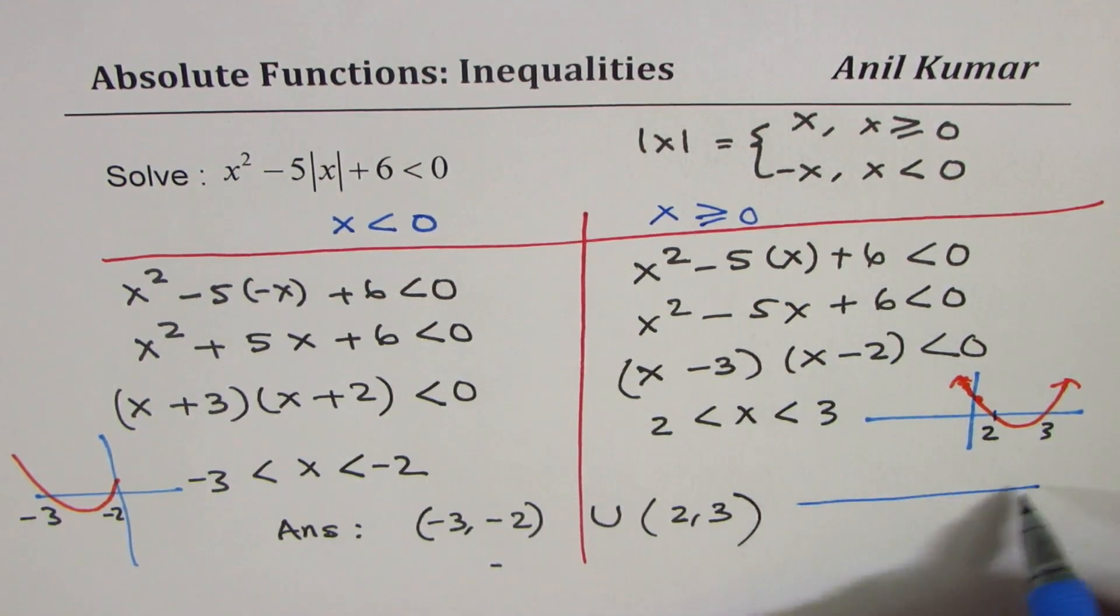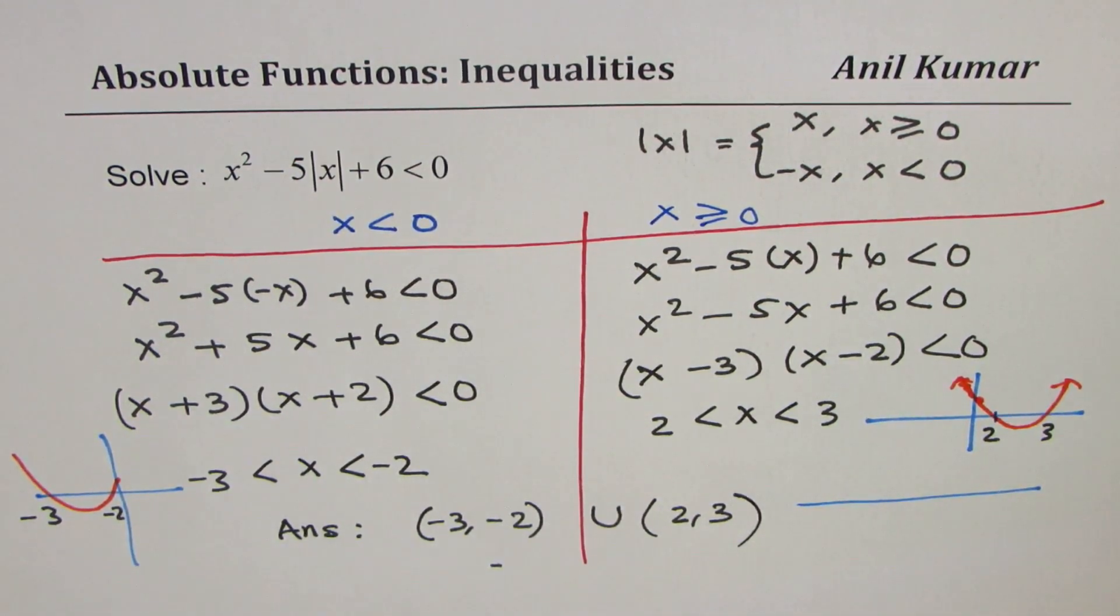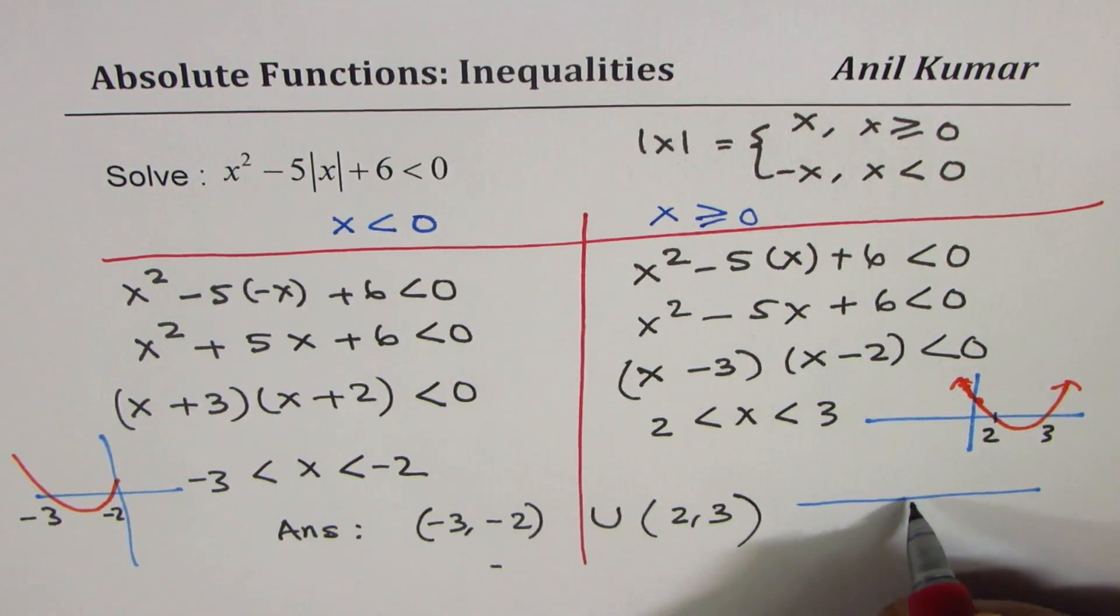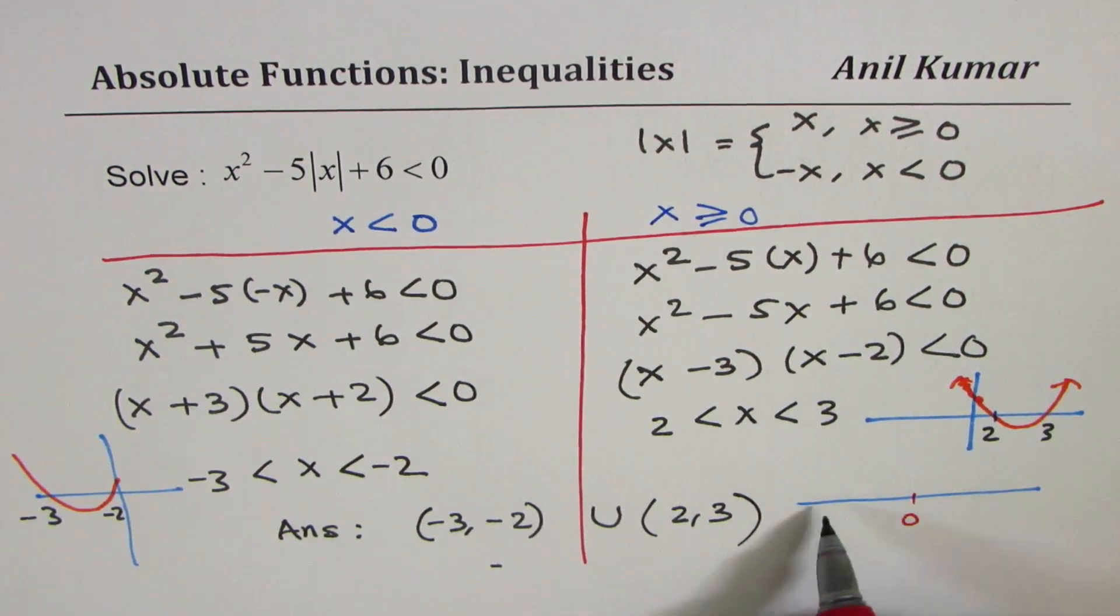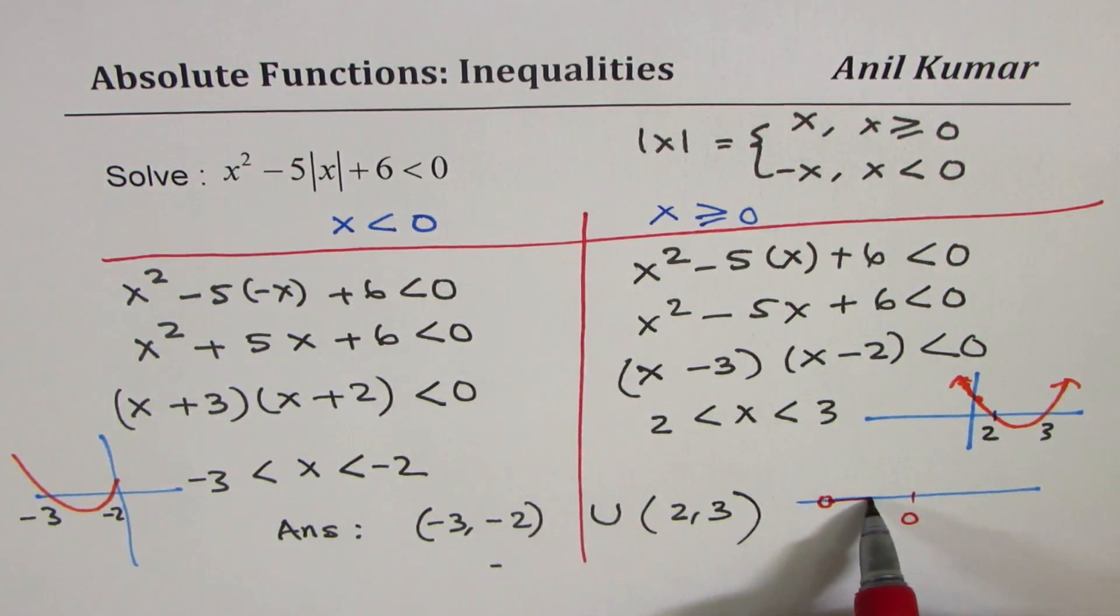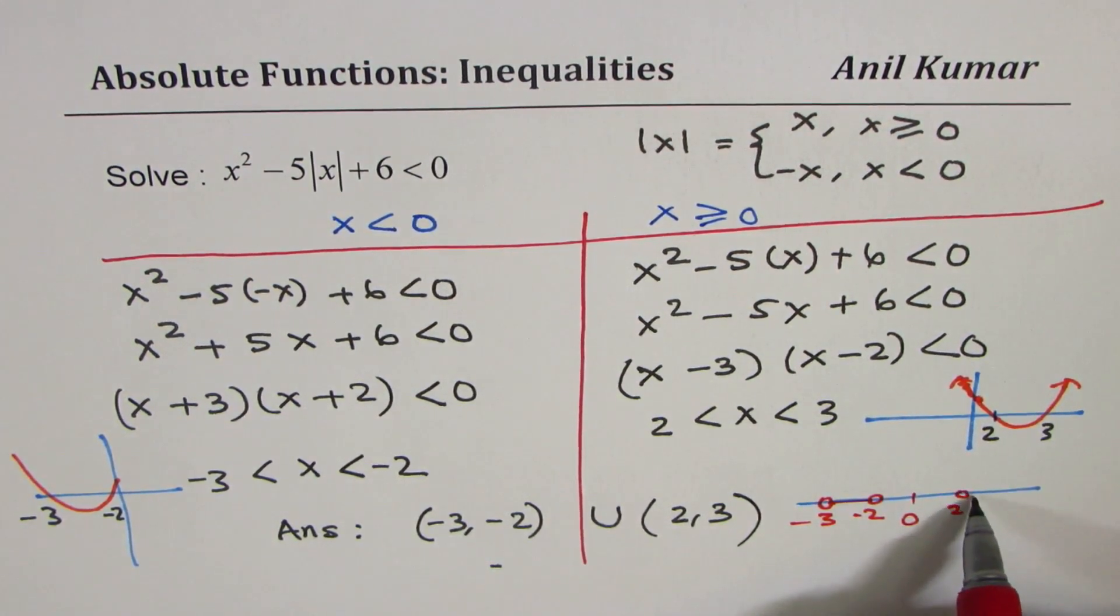On a number line, we could show that if this is 0, in that case, the solution is between minus 3 and minus 2 or 2 and 3. That becomes the solution on a number line.